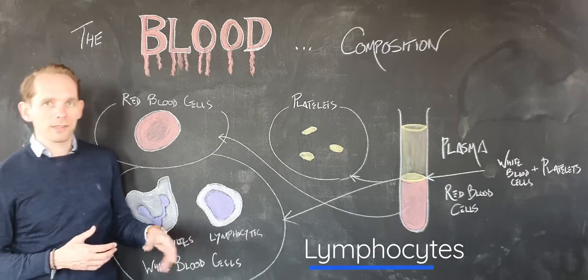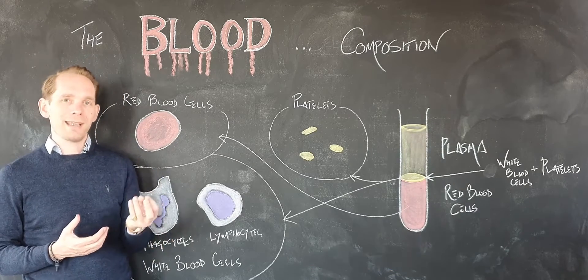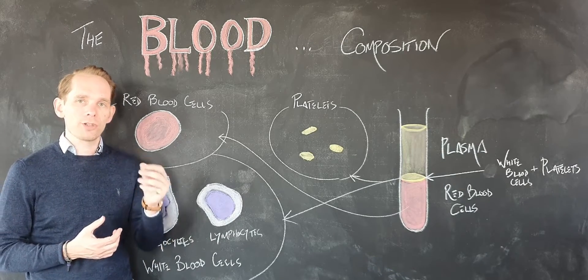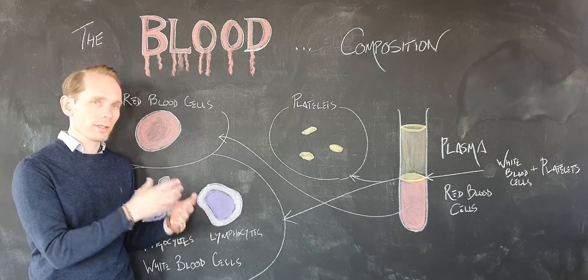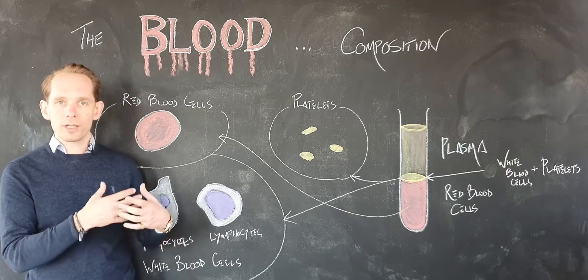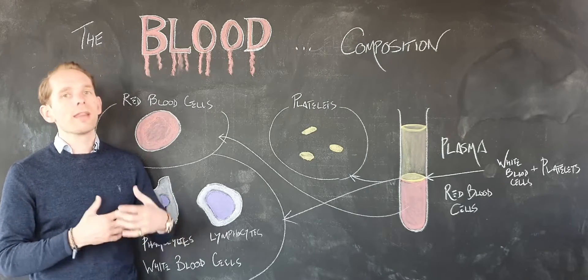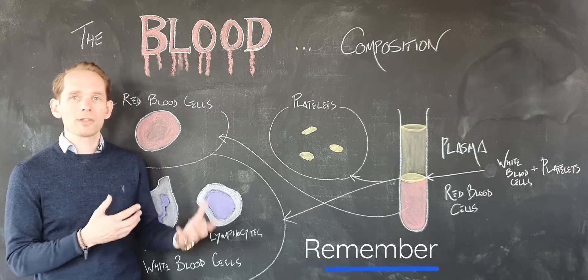But the other kind, lymphocytes, will detect any sort of antigen that is a specific protein on the coating of a pathogen, and if the body has encountered this thing before, they will remember essentially how to destroy it.